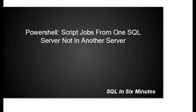This morning we're going to learn how to script jobs from one SQL Server to another in PowerShell. To give an example of how this would work: suppose we have a QA server and a production server. We want to look at our production server, see what jobs exist there, and compare them to the jobs in QA. If a job exists in QA that does not exist in production, we want to script out that job.